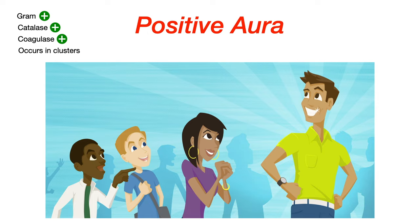In Staph aureus, that aura is positive, so all of the defining characteristics have a positive aura: gram positive, catalase positive, coagulase positive — it's all positive. For the last characteristic, occurring in clusters, this guy is so positive that people just cluster around him, drawn to him, just as Staph aureus cocci cluster together.